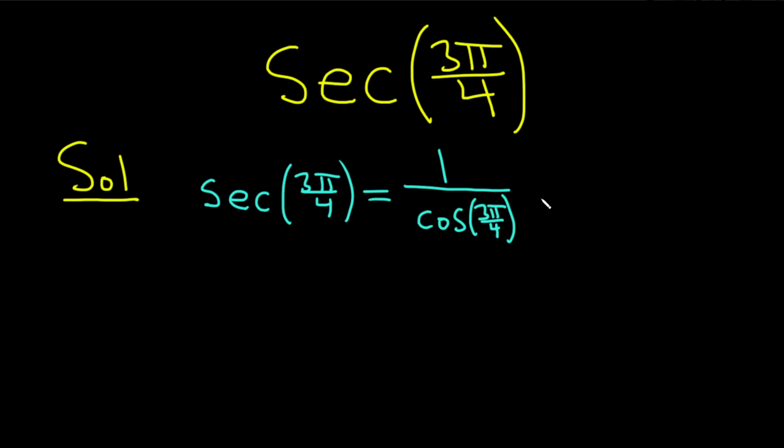So now we just have to compute the cosine of 3 pi over 4. This is one of the easier angles. You first look at the cosine of pi over 4. The cosine of pi over 4 is the square root of 2 over 2.